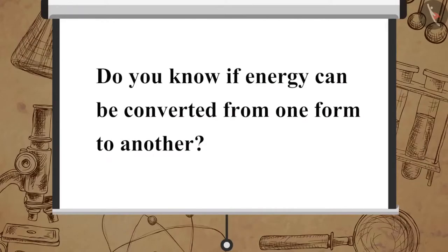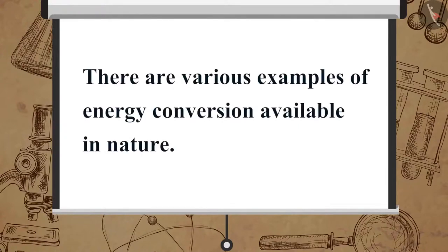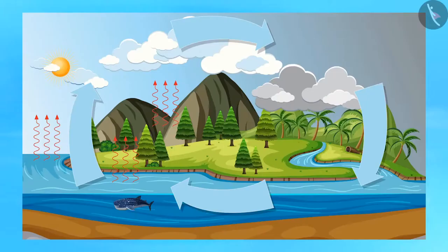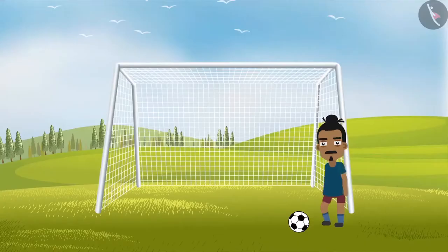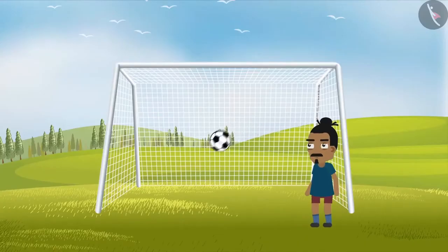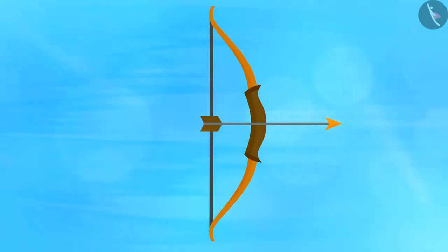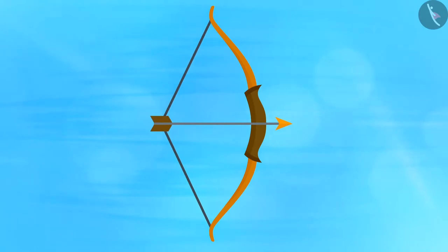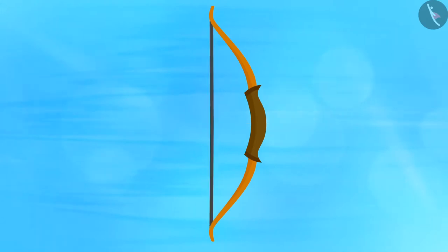Now, do you know if energy can be converted from one form to another? There are various examples of energy conversion available in nature, like the water cycle or the process of photosynthesis using which plants prepare food. Now, let us have a look at some examples of human activities that involve energy conversion. In the bow and arrow example we studied earlier, potential energy is stored when the bow string is stretched, and it is used in the form of kinetic energy to throw off the arrow.